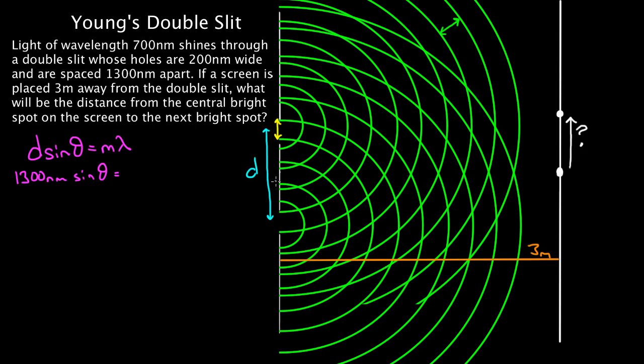I'm going to worry about the angle from here's my center line, from there to the point I'm concerned with is this first bright spot past the center point. So that's the angle I'm concerned with. This angle right here equals m. What should m be? Well, this is zero. Should I put zero? No, because I don't want the angle to the center one. I want the angle to the first one over here. So this is m equals one, the first order bright spot constructive point.